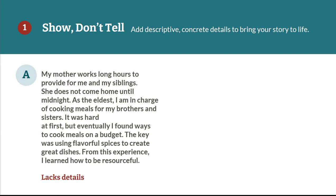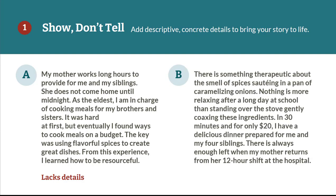As you can see, this example doesn't offer many details. Let's look at Example B: 'There is something therapeutic about the smell of spices sautéing in a pan of caramelizing onions. Nothing is more relaxing after a long day at school than standing over the stove, gently coaxing these ingredients. In 30 minutes, and for only $20, I have a delicious dinner prepared for me and my four siblings. There is always enough left when my mother returns home from her 12-hour shift at the hospital.' Example B gives more detail and description, and it uses the senses to paint a stronger picture.